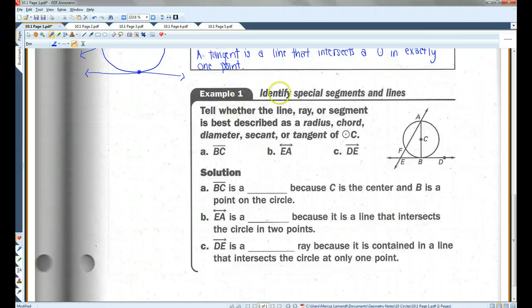Let's do an example. Identify special segments and lines. Tell whether the line, ray, or segment is best described as a radius, chord, diameter, secant, or tangent of circle C. Let's take a look at segment BC. Segment BC is right here. This is a radius. BC is a radius because C is on the center and B is a point on the circle.